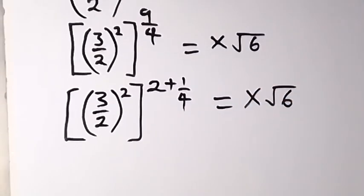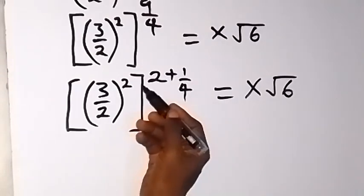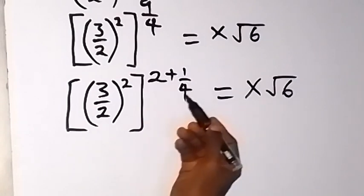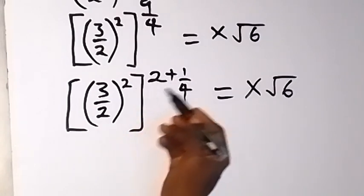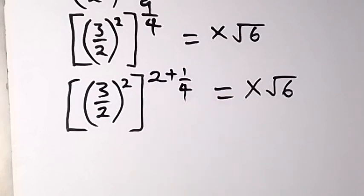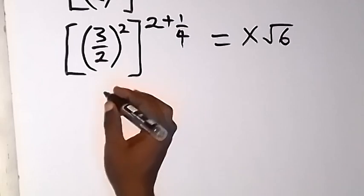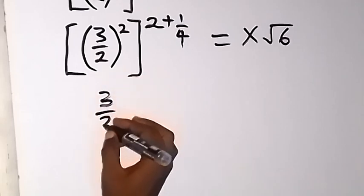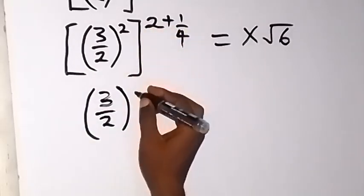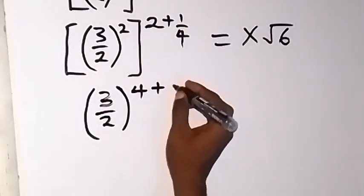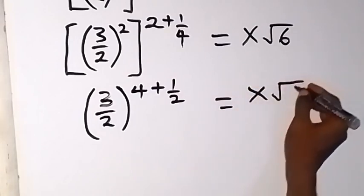Now from here, we can use these two inside to multiply this fraction with the fraction outside there. We have 2 times 2, that's 4. Then 2 times 1 over 4, that will be 1 over 2. So this power will become 3 over 2, raise to power 4 plus half. Equals x root 6.